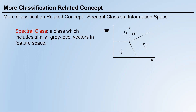On the right hand, we have this feature space formed by the NIR near-infrared band and red band. We have multiple pixels here, marked by different numbers: 1, 2, 3, and 4. Each number represents a specific class, so we have four classes here.